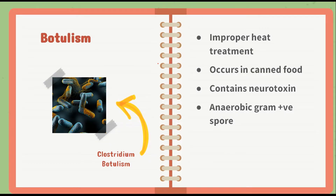First is botulism. It occurs in canned food products and the microorganism causing botulism is Clostridium botulinum. It is caused due to improper processing and improper heat treatment in food products. Botulism is a disease caused by food containing a neurotoxin produced by Clostridium botulinum. Clostridium botulinum is an anaerobic, gram-positive, spore-forming, rod-shaped bacteria that mostly occurs in soils and fresh water.